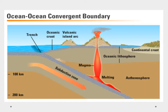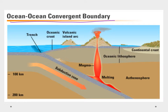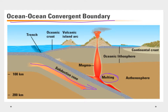The first type of boundary we'll talk about is the ocean-to-ocean convergent boundary. That's oceanic crust colliding with oceanic crust, and we're going to have subduction. As this oceanic crust is being subducted, we see melting that causes magma formation, which rises up to the surface, forming volcanic island arcs.